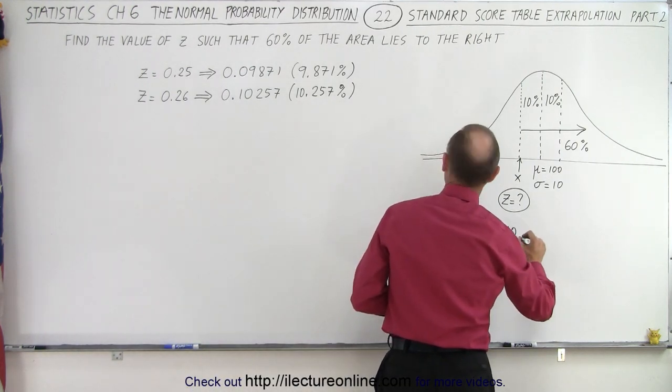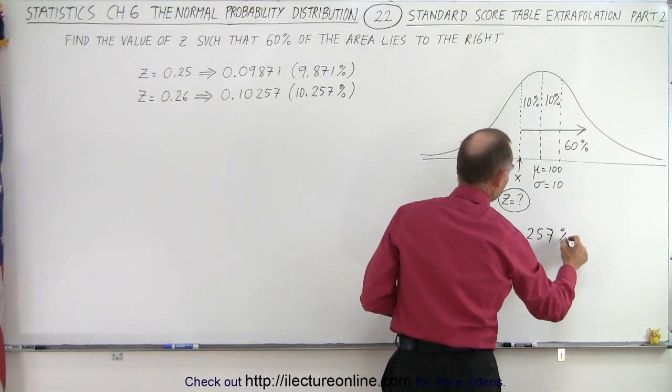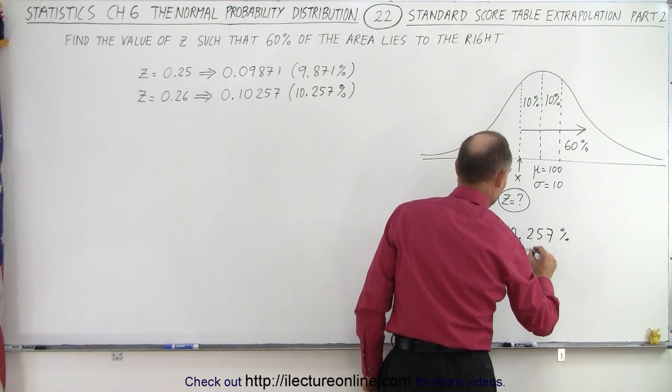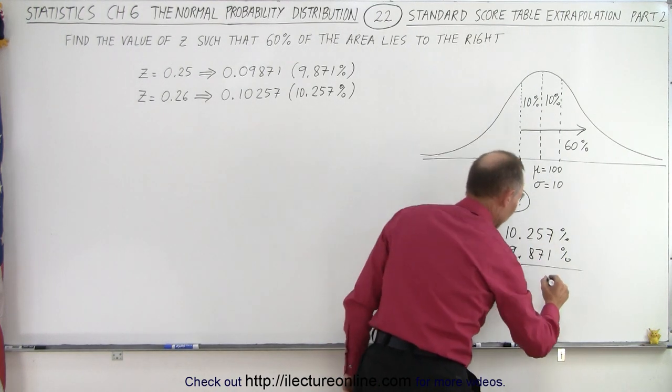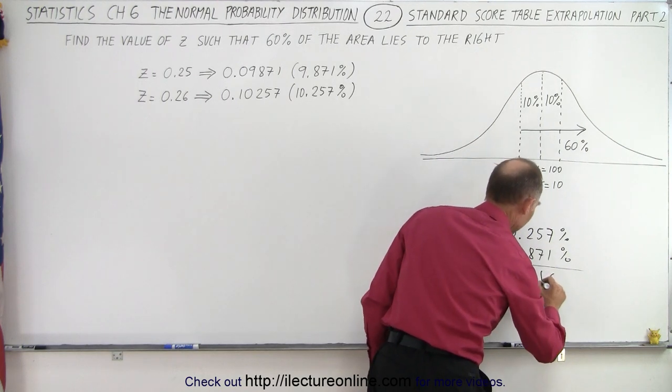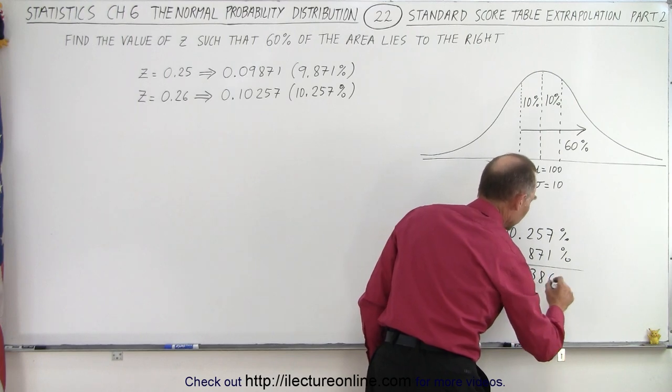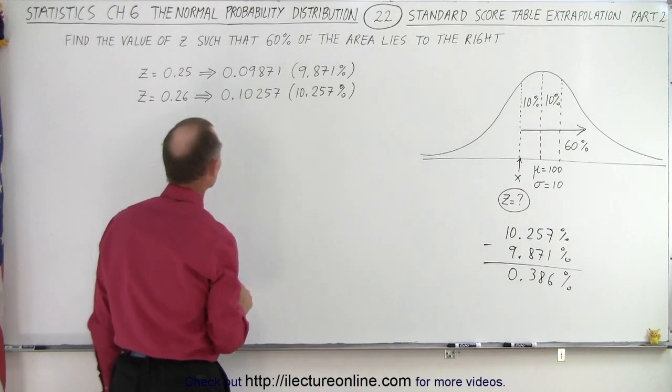So we have 10.257%, subtract from that 9.871%, and when we do that we get 6, 15 minus 7 is 8, 11 minus 8 is 3, and 0. So it would be 0.386%, which is the difference between those two.